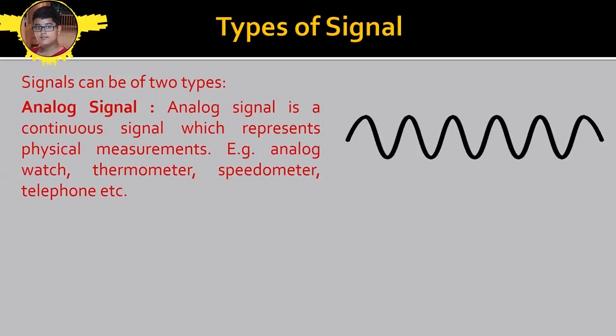There are two types of Signal. One is Analog. It is a continuous signal which represents physical measure. We can say that the value gradually moves from one point to another and covers all the infinite points between the two given points.